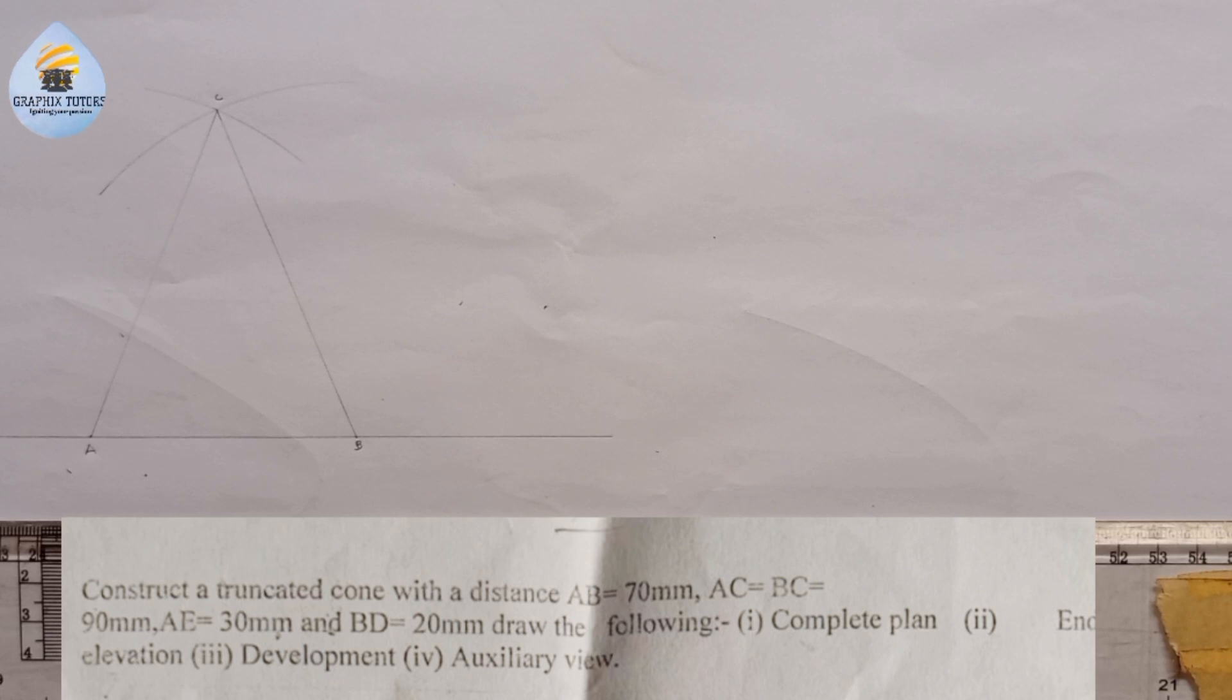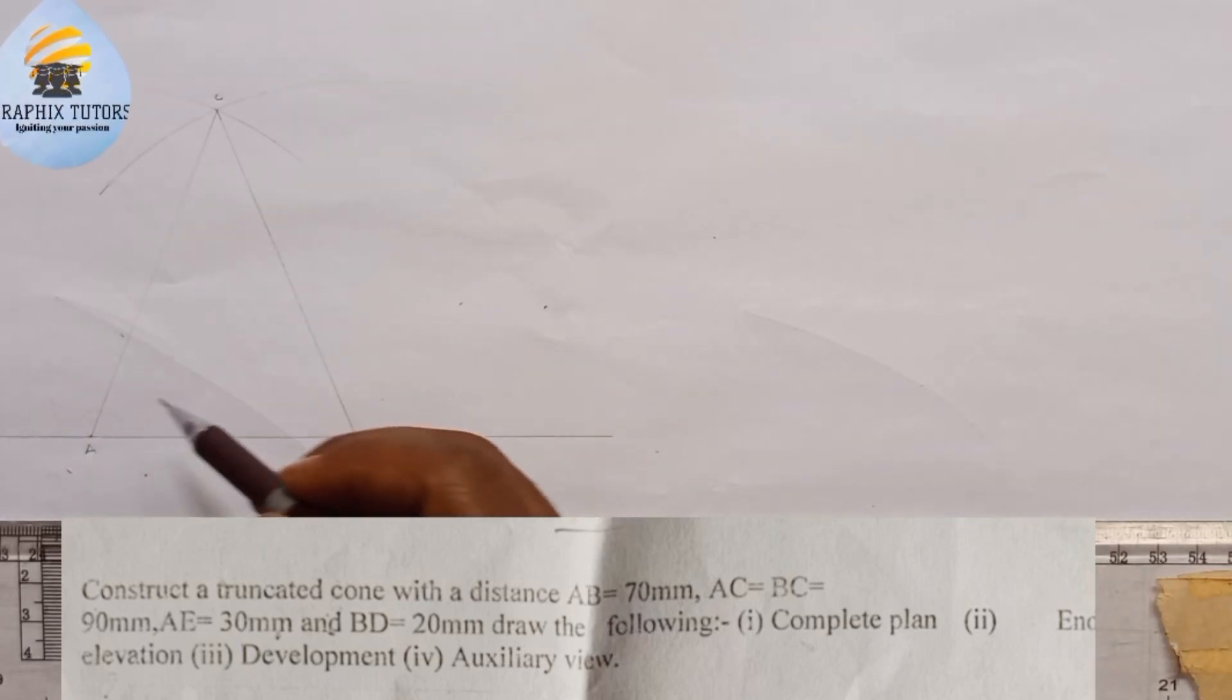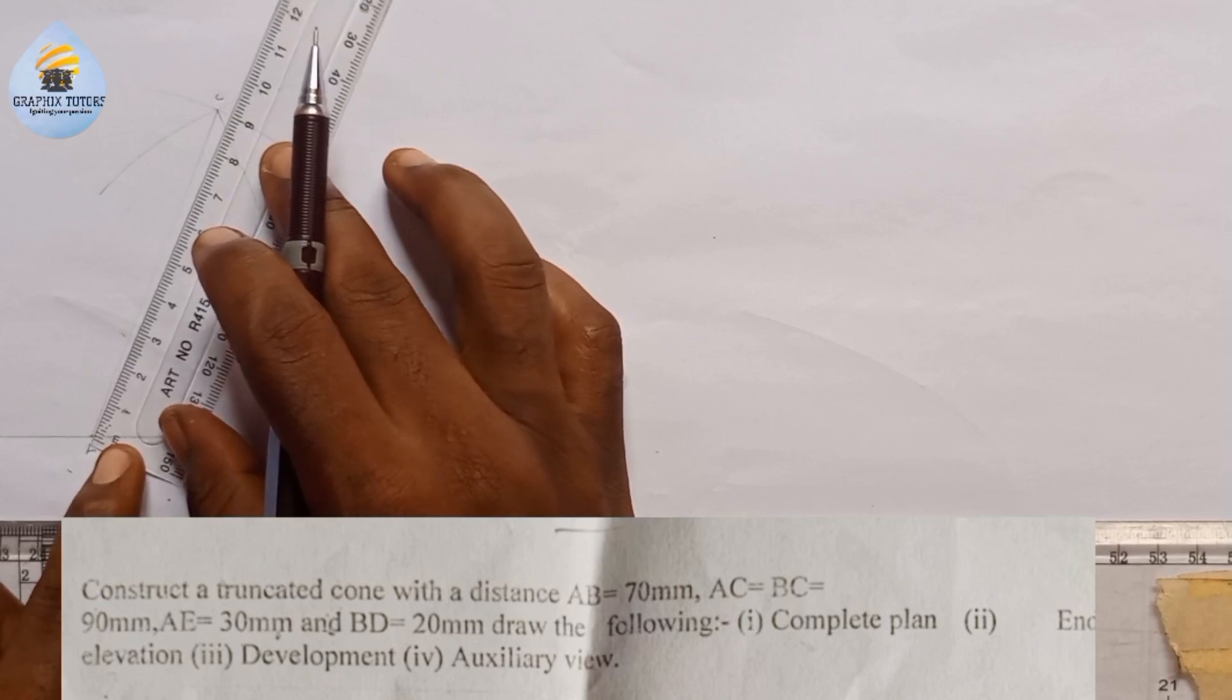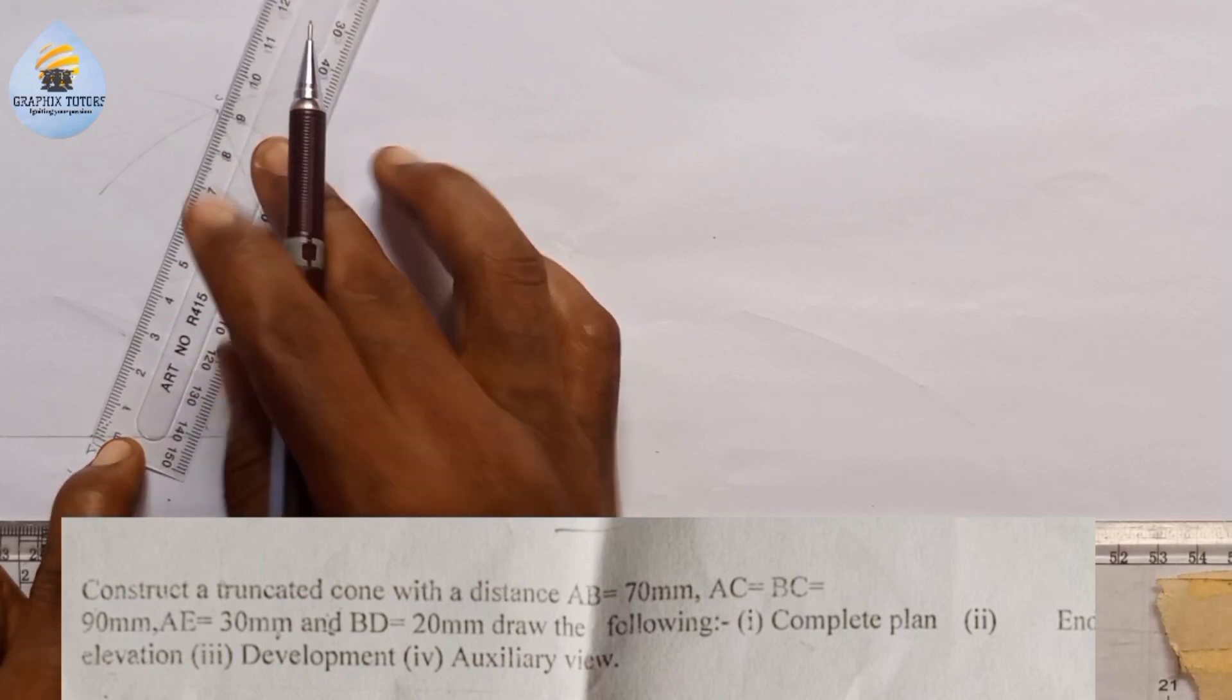Now we are told that AE is 30 millimeter. That means AE is somewhere around here. So we're going to measure 30 millimeter along that line. AE is 30, so from here this is 30.